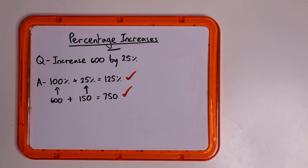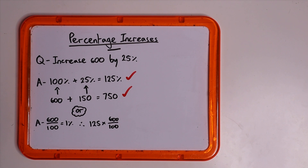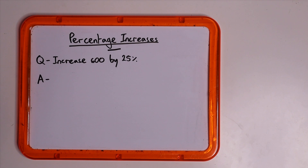However, this can also be solved by dividing 600 by 100 to find what 1 percent is, and then multiplying this 1 percent by 125 to find 125 percent. Although by far the easiest way is simply multiplying by 1.25. This is essentially multiplying the number by 1 and a quarter, which is 125 percent, as 100 percent is the full number and 25 percent is a quarter of it. This idea can then be used for any percentage increase.